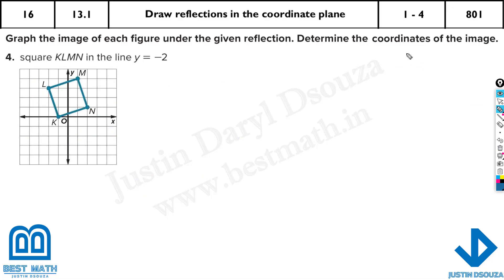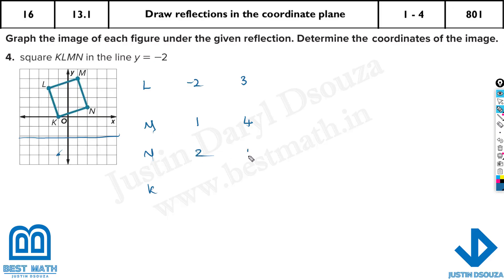Another similar one here, but it is along y is equal to minus 2. The points will be reflected somewhere here and here. For the first original image — L, M, N, K — the coordinates are: L = (minus 2, positive 3), M = (1, positive 4), N = (2, positive 1), and K = (minus 1, 0).